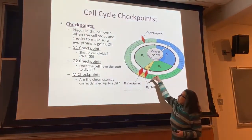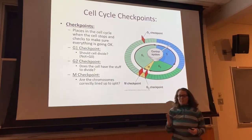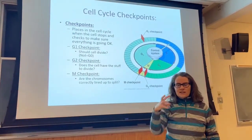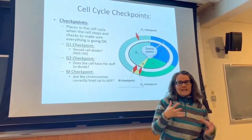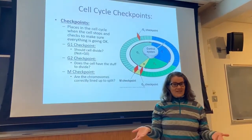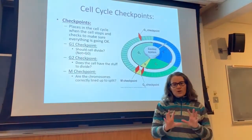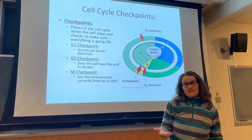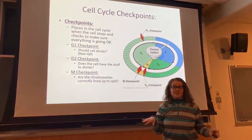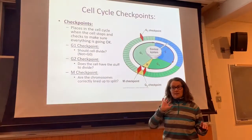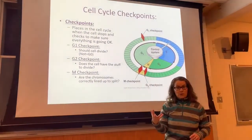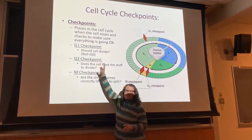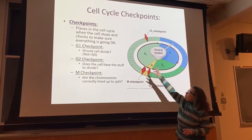At the G1 checkpoint, at the end of G1, the cell is stopping and asking itself: should I divide? Division is a lot of energy — it takes energy to copy your chromosomes and get the organelles ready. A cell that doesn't need to divide would just be wasting its time. Some cells will decide they're not going to divide at all. Think of cells that are difficult to replace if damaged, like nervous system cells — a lot of those have entered a G0 phase, which loops back on itself, where the cell just maintains normal function.